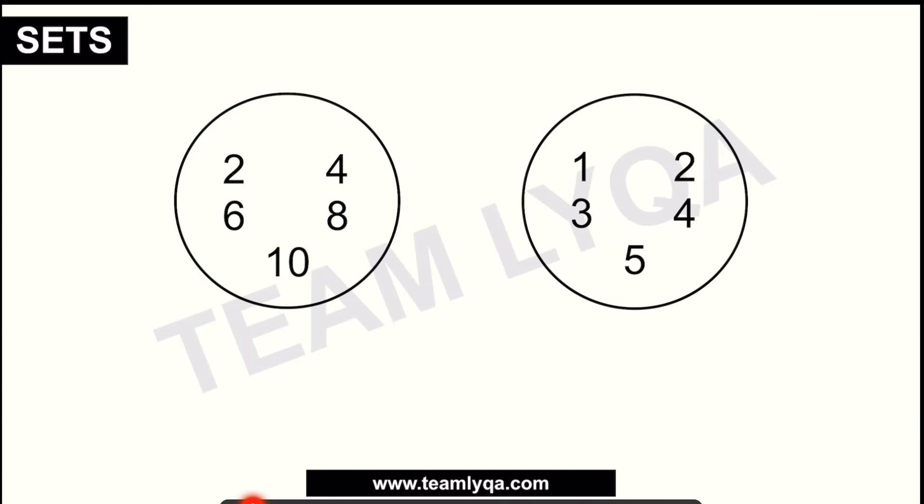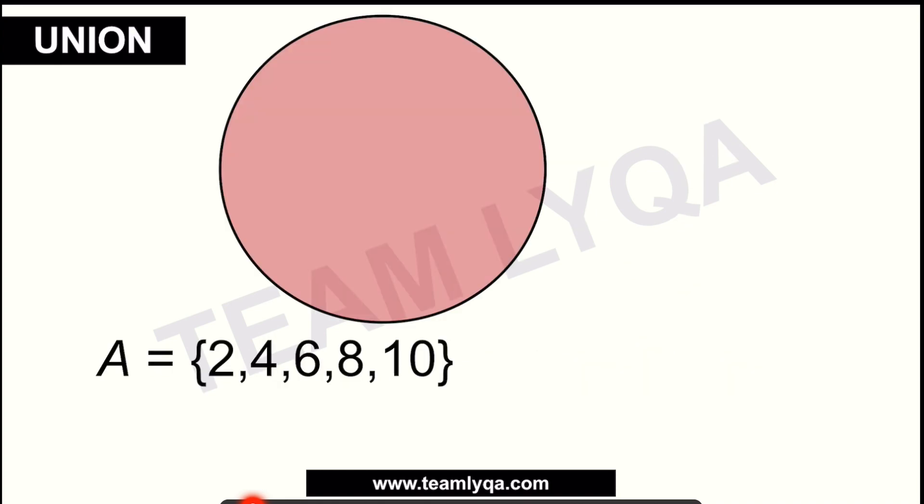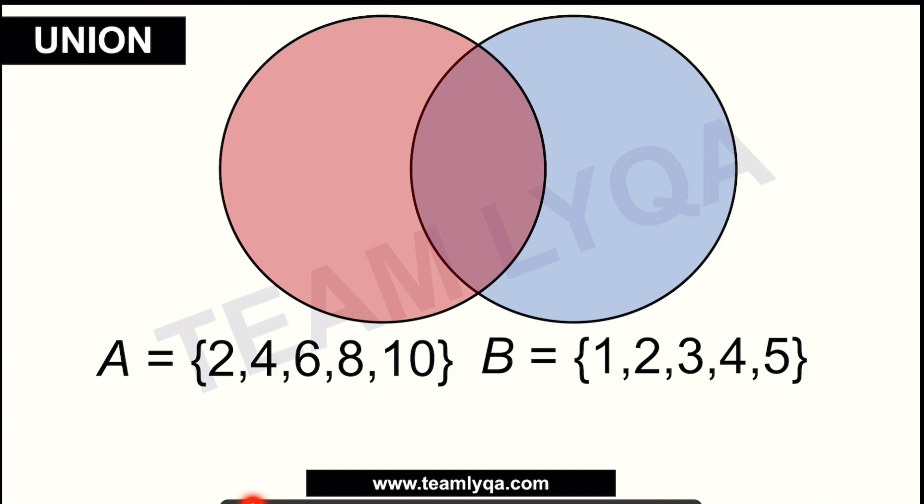In A or in B means everyone, all of them. Now to better see this, let's use this example. We have two sets right here. Set A and set B, with these contents. So set A has 2, 4, 6, 8, and 10. Set B has 1, 2, 3, 4, and 5. Now, if we're going to have a union of these two sets, we can draw it like this.